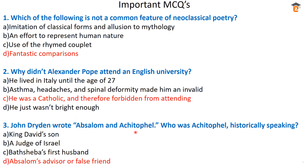Question number three: John Dryden wrote 'Absalom and Achitophel' — who was Achitophel historically speaking? The correct answer is option D: Absalom's advisor or false friend. This was a satirical political poem by John Dryden. Absalom and Achitophel were the two characters; Absalom represented King David, and Achitophel was Absalom's advisor or false friend.